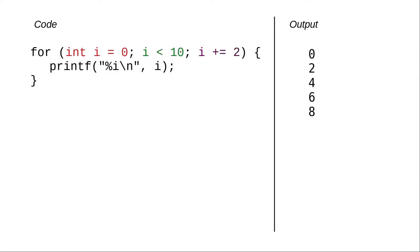There's also no law that says you have to count by 1. In this case, the action after each iteration adds 2 to the counter variable instead of 1.